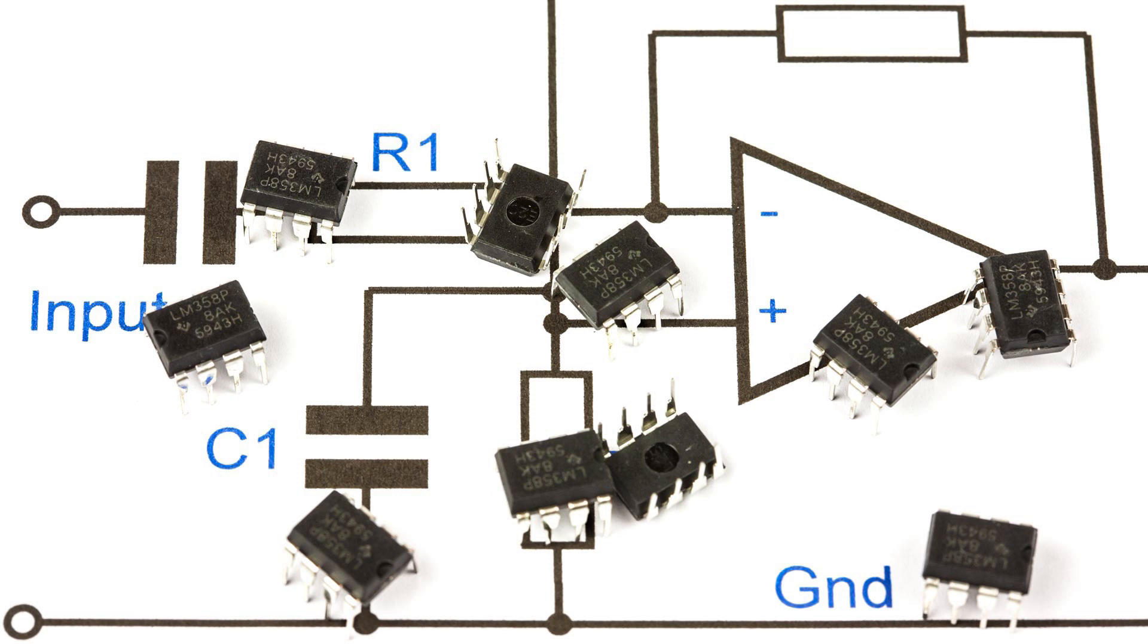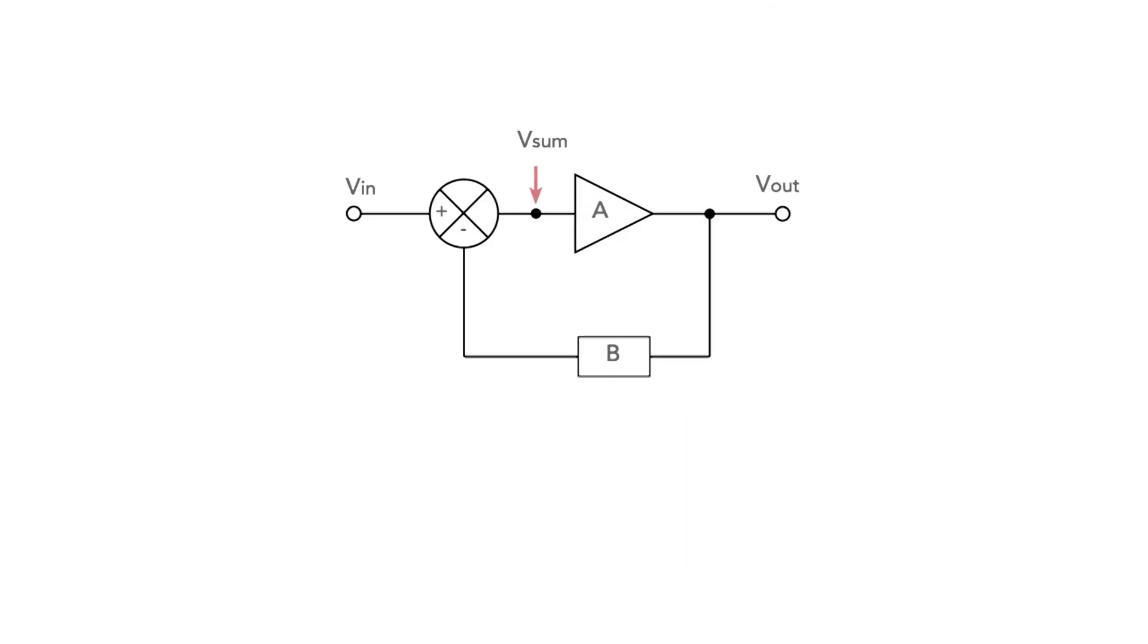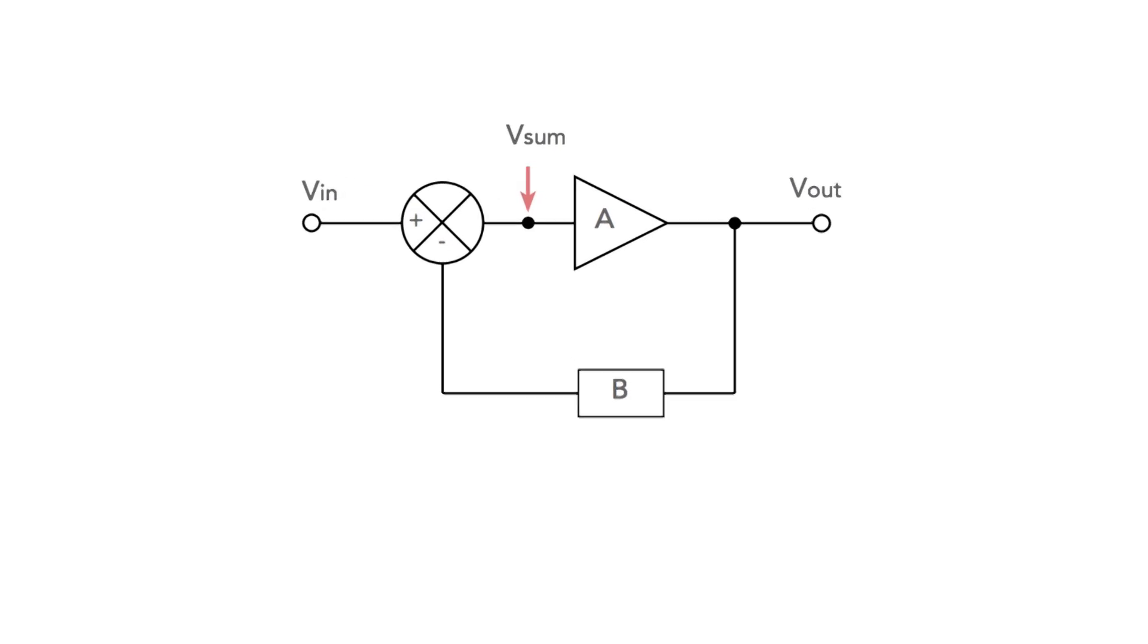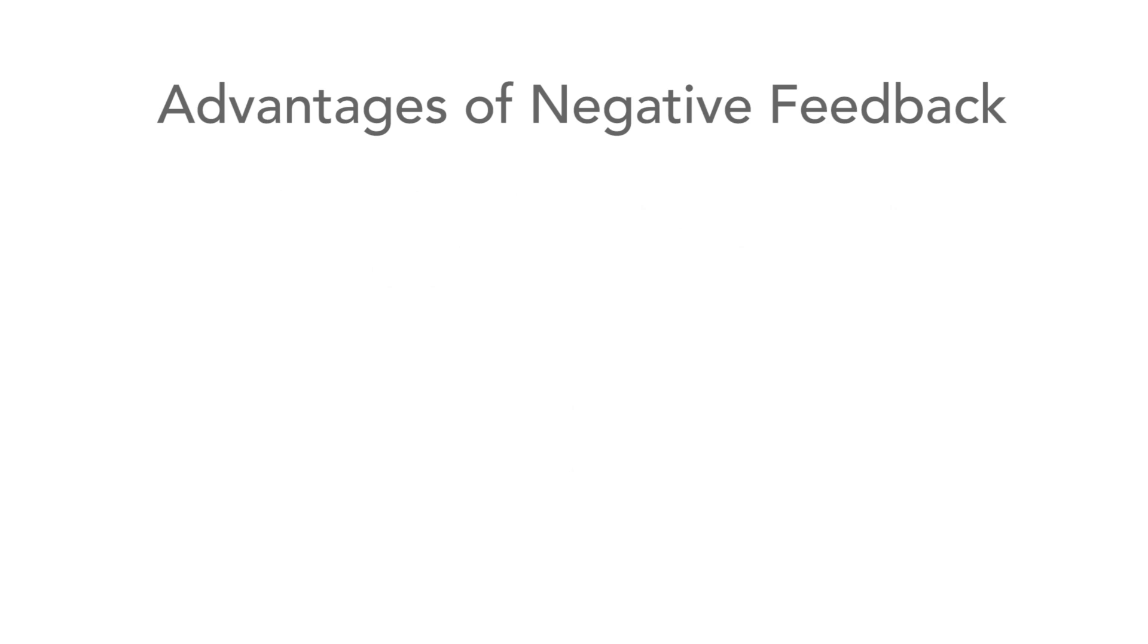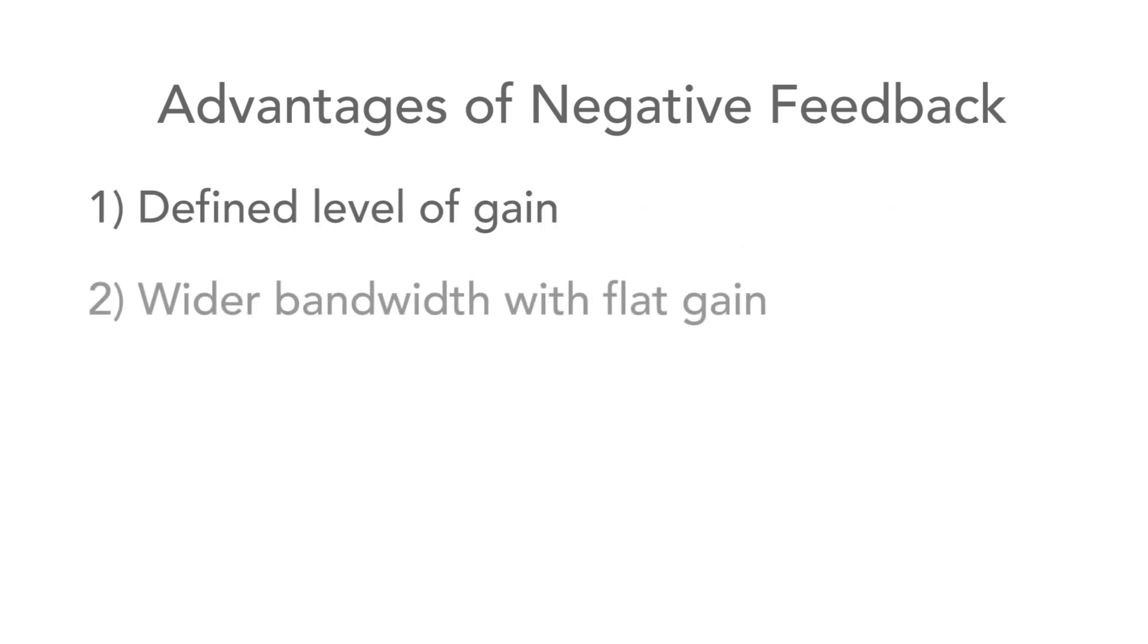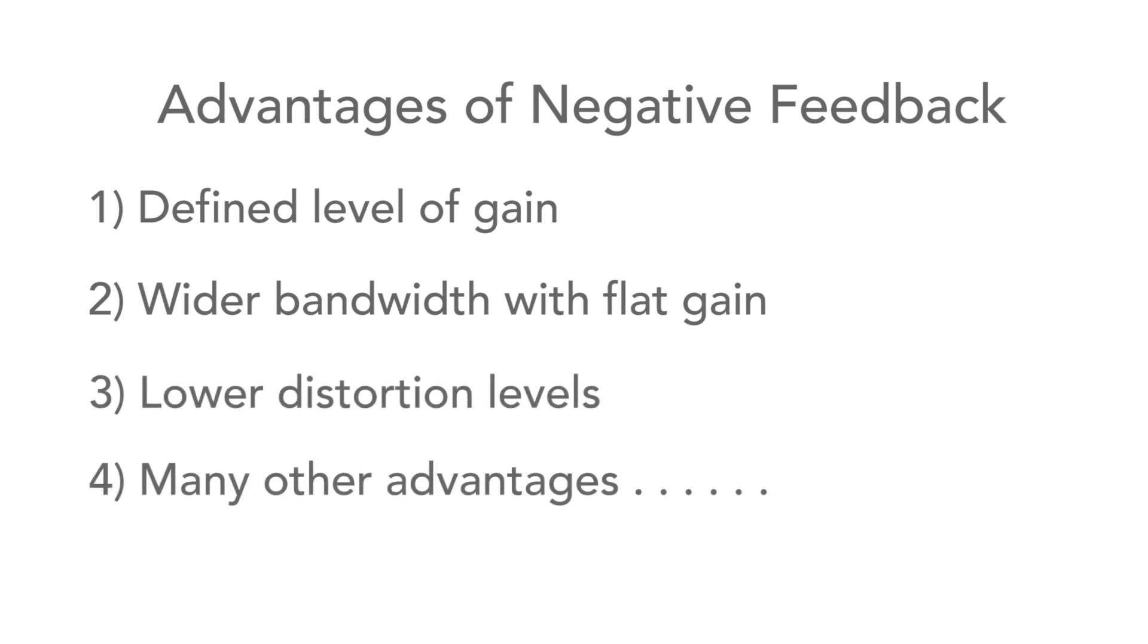When an operational amplifier is used to provide gain, normally it has negative feedback applied around it as shown in this generic diagram. The feedback provides a number of advantages including a defined level of gain, wider flat bandwidth, lower distortion and a number of other advantages as well.